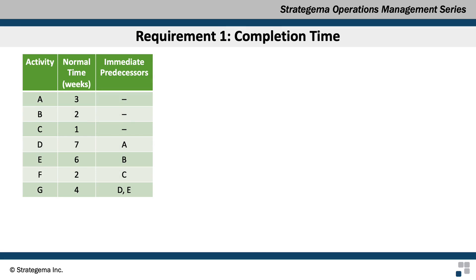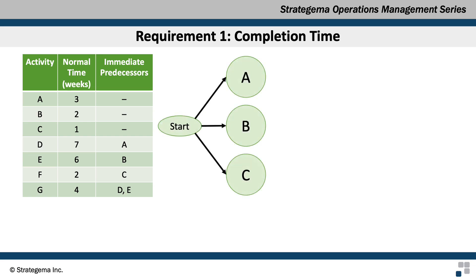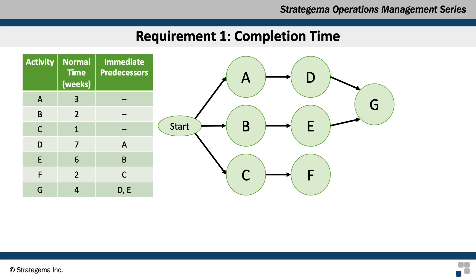The first step in determining the completion time is easiest done by constructing a PERT/CPM diagram. I'll create one using the activity on node (AON) approach. Activities A, B, and C have no immediate predecessors so they can all start at the same time. Activity D is preceded by A, activity E is preceded by B, and activity F is preceded by C. Activity G is preceded by both D and E. The project is complete once activities G and F are completed.